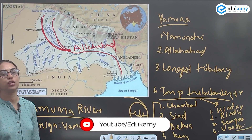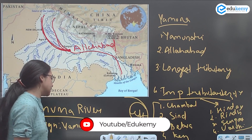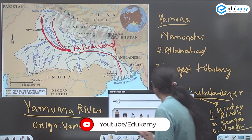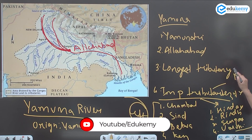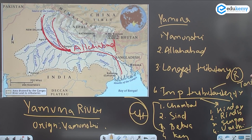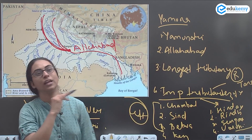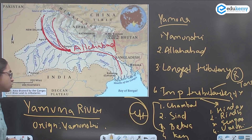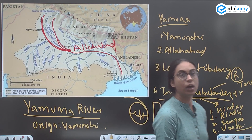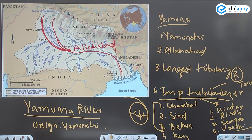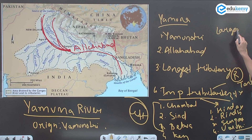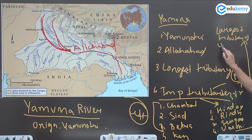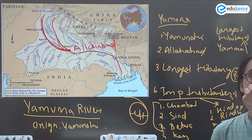A very important tributary of Yamuna is the Tons River (T-O-N-S), which is also a right bank tributary. It is said that Tons carries more water than Yamuna itself in Uttarakhand. Tons is the largest tributary of Yamuna.